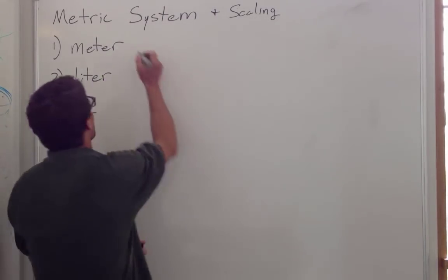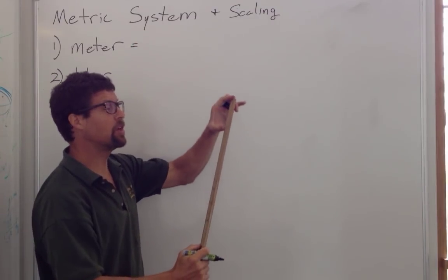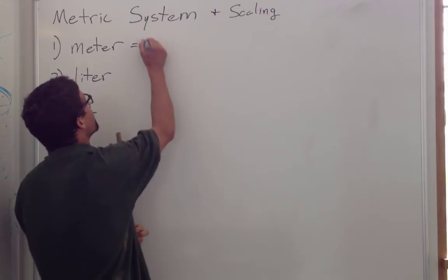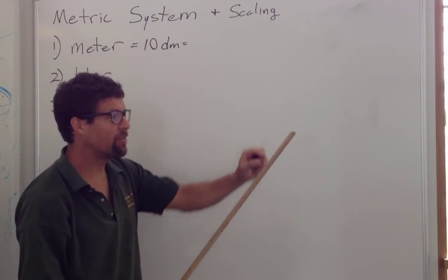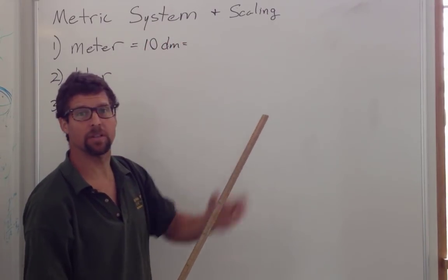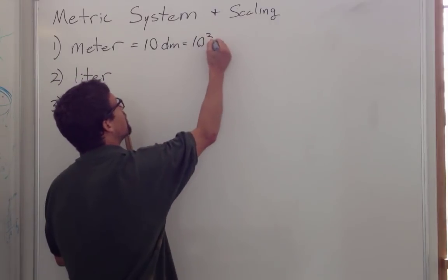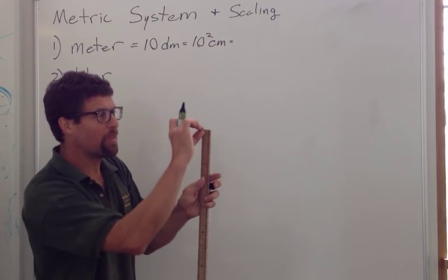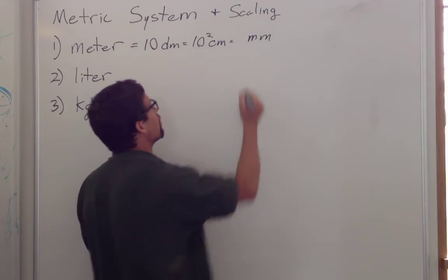Let's know our prefixes. A meter is equal to 10 decimeters, so deci is 1 tenth. A meter is equal to 100 centimeters, centa is one hundredth. And it's equal to a thousand millimeters, the width of a dime. Milli is one thousandth.